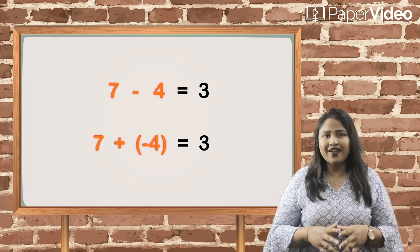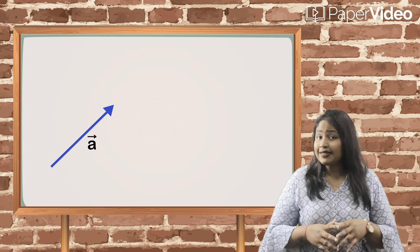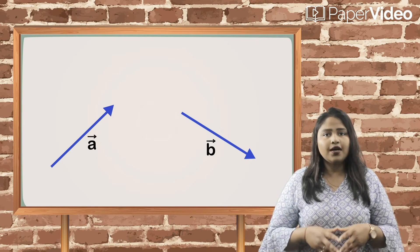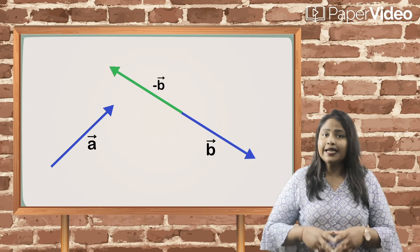We can do the same with the vectors. We have vector A and vector B. Let us draw a negative vector of vector B like this.